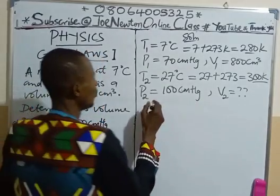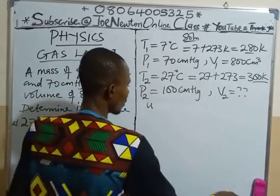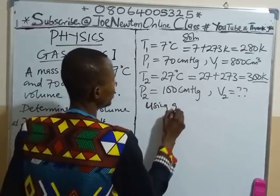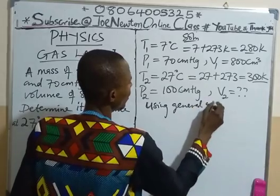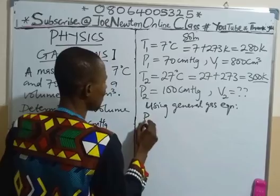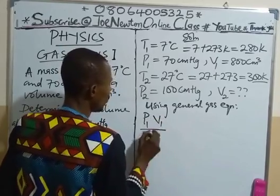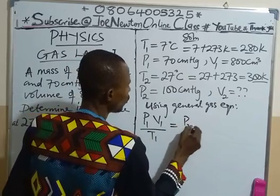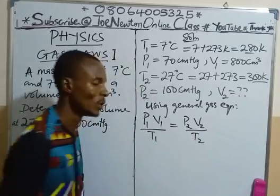Using the general gas equation, we have that P1 V1 all over T1 is equal to P2 V2 all over T2. This is the general gas equation.